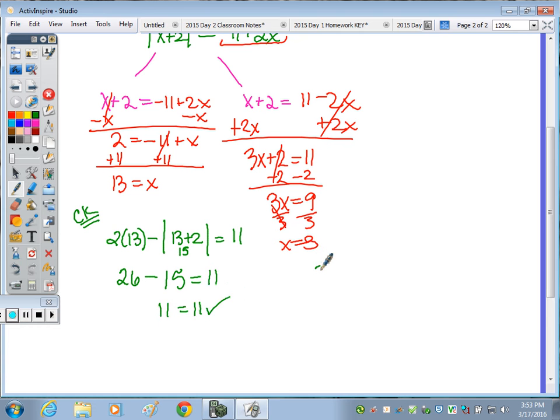Now 2 times 3 minus the absolute value of 3 plus 2, does that equal 11? So 2 times 3 is 6 minus... 3 plus 2 is 5, and the absolute value of 5 is 5. Is 6 minus 5 equal to 11? It is not, it's 1.